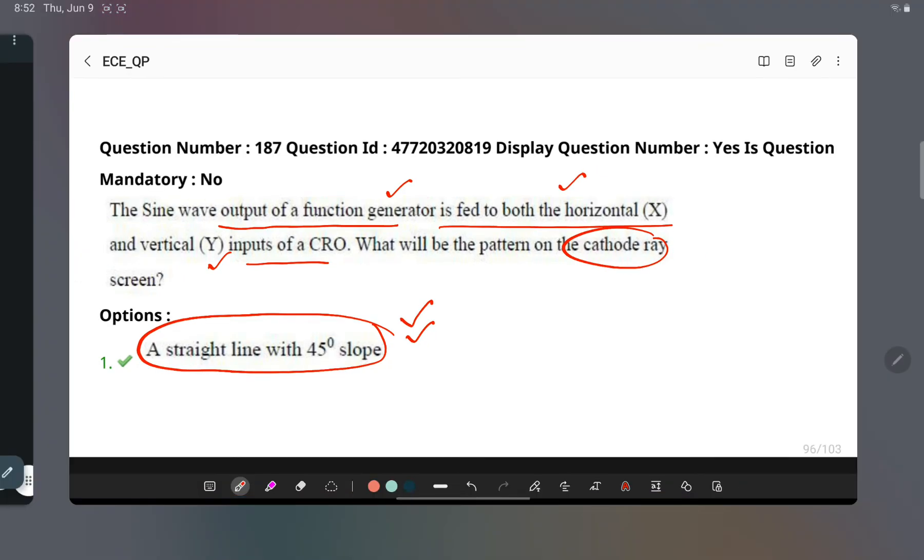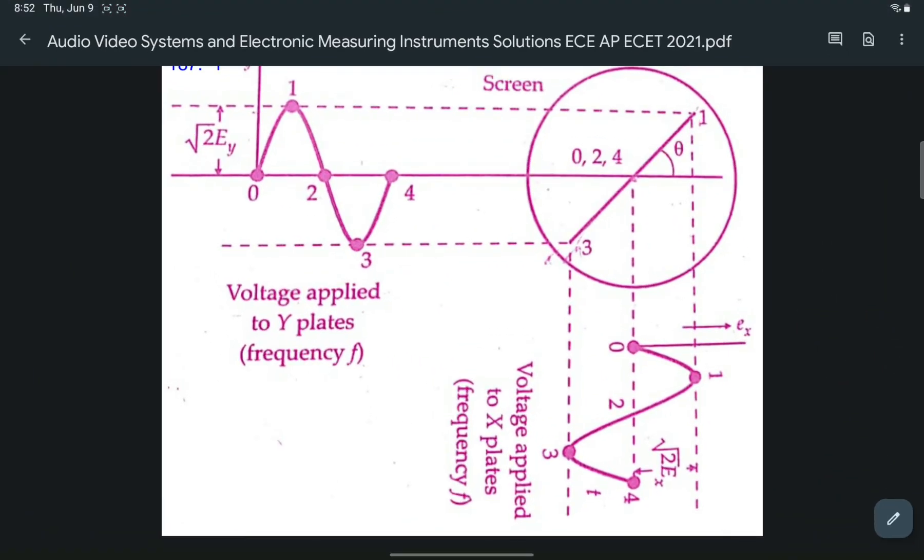Try to remember this particular diagram because there is a good chance that the question can be repeated. So here voltage is applied to the Y axis and voltage is applied to the X axis, and you have a straight line on the screen at an angle of 45 degrees. With this, the questions related to this particular topic are completed. Thank you.